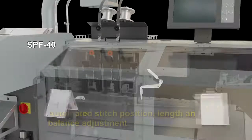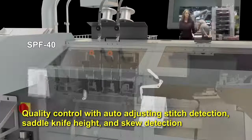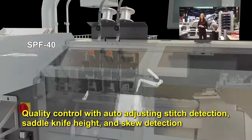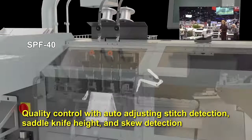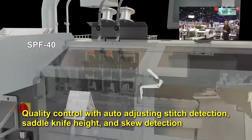Stitch position, length and balance are all automated in the Mark III, and a larger range for stitch distance allows for more applications to be produced. Auto-adjusting stitch detection, saddle knife height, and skew detection further ensures the highest quality.